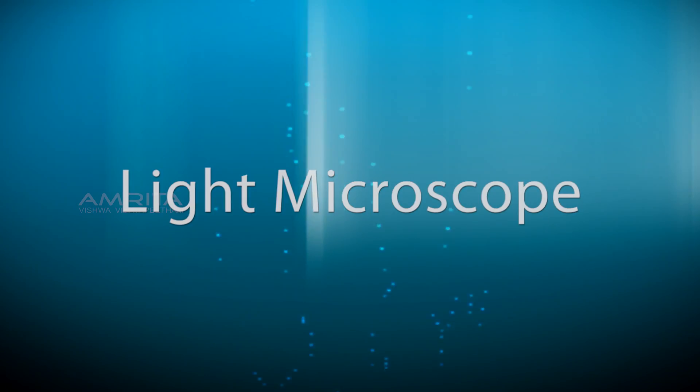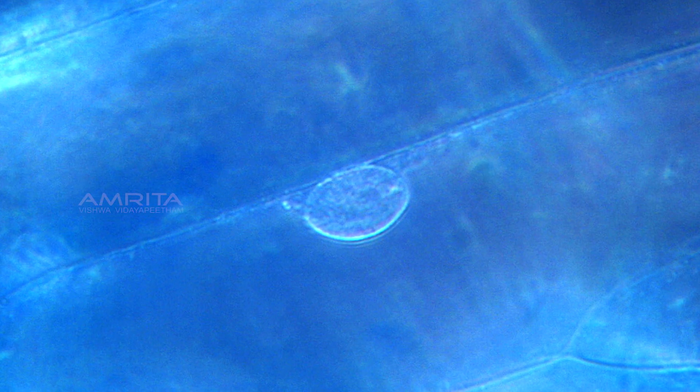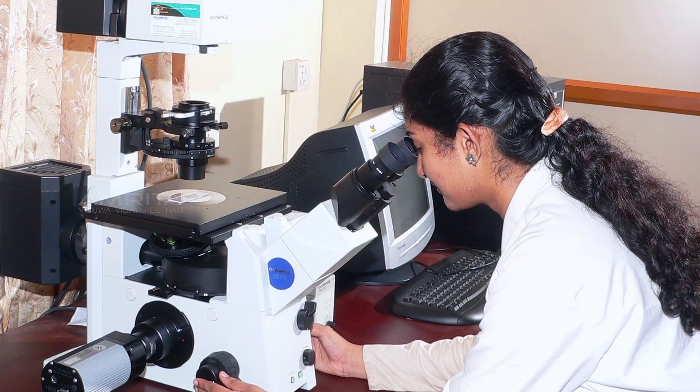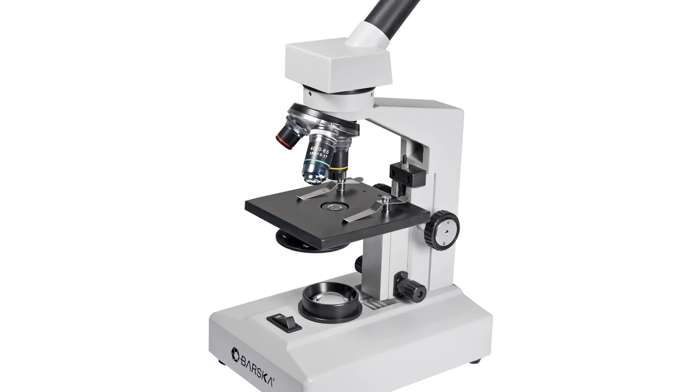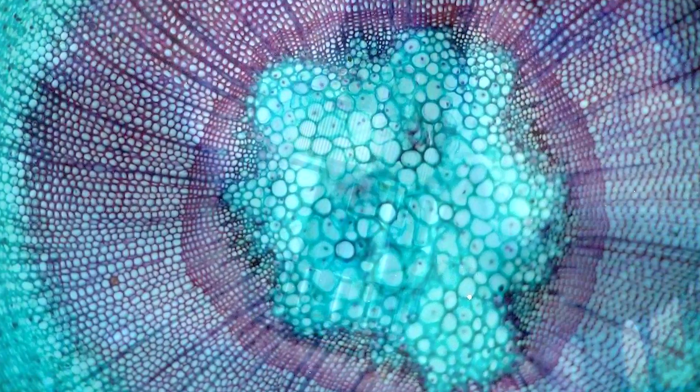Light Microscope. Microscopy is a technology of making very small things visible to the human eye. The instrument used for this technique is called a microscope, in which we can use visible light to make specimen observable.